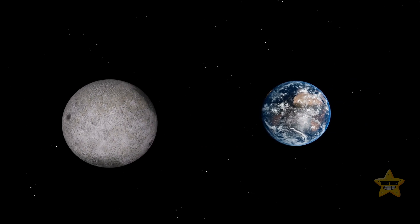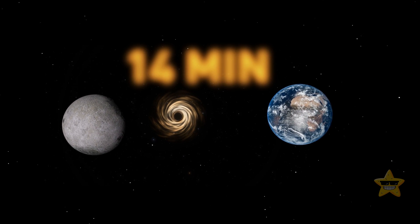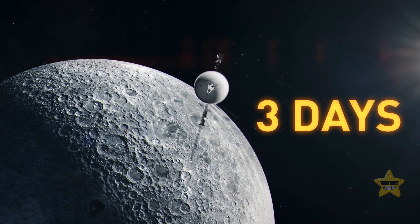If it was somewhere in our solar system, the moving black hole could cross the distance between our home planet and the moon in a mere 14 minutes. A regular spacecraft needs three days to do that.